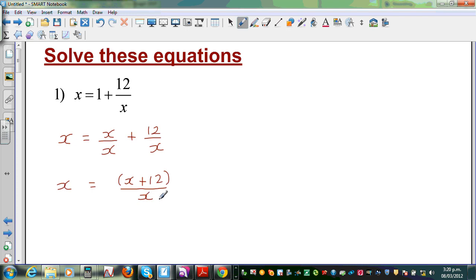Now I want to get rid of this x from this side. So I'm going to multiply this side by x. If I multiply this side by x, so you do the same thing to this side. So this becomes x times x is x squared, is equal to, this x and this x gets cancelled. So you've got x plus 12.